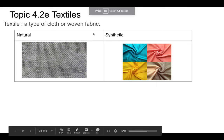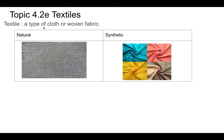Our next material for topic 4.2e is textiles. A textile is any type of cloth or woven fabric. There are basically two types: natural and synthetic.